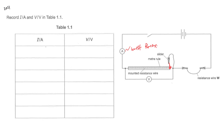You can set your independent variable — in this case, which is your I (current). I is your independent variable, and it will always appear on the leftmost column of the table. Independent means you set the values yourself; some call it the change variable. For this case, the current is the lowest, which is 0.12.